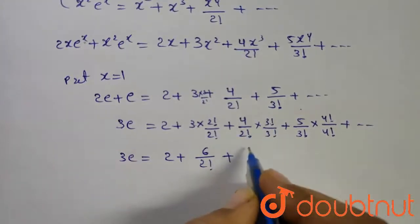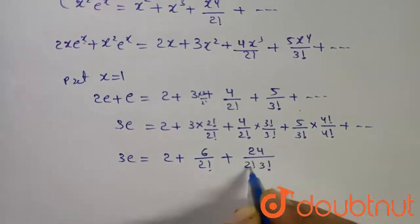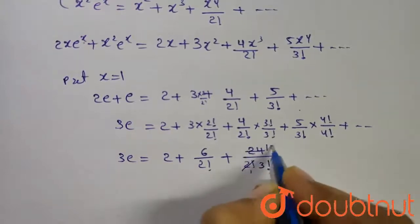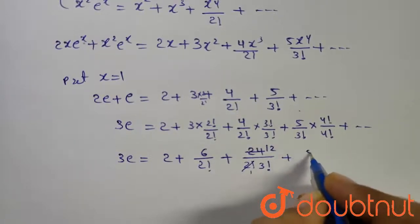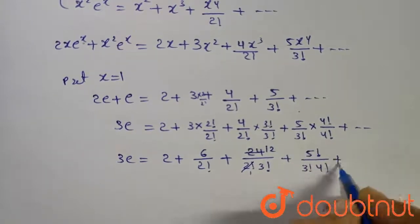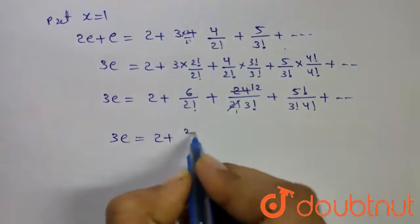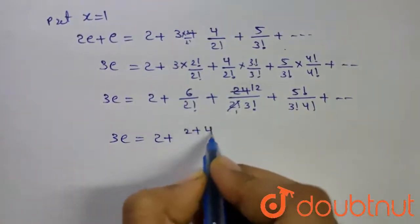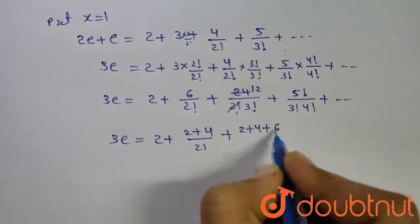which gives 4 into 6 is 24 divided by 2 factorial into 3 factorial, and this can be written as 5 factorial divided by 3 factorial into 4 factorial, and so on. So 3e equals 2 plus 6, which can be written as 2 plus 4 divided by 2 factorial, and 12 can be written as 2 plus 4 plus 6 divided by 3 factorial, and so on.